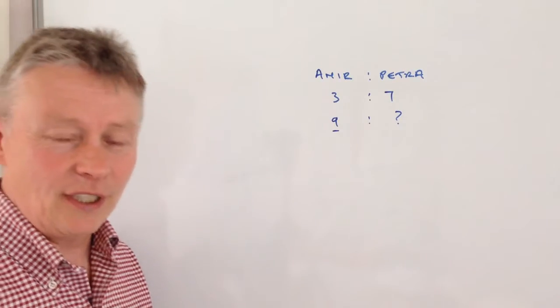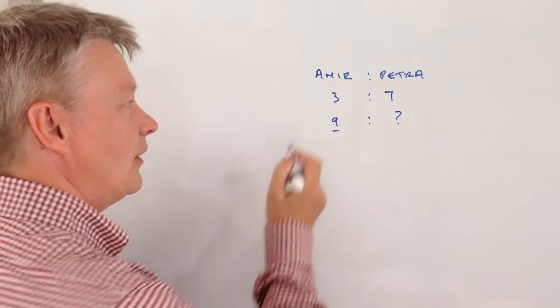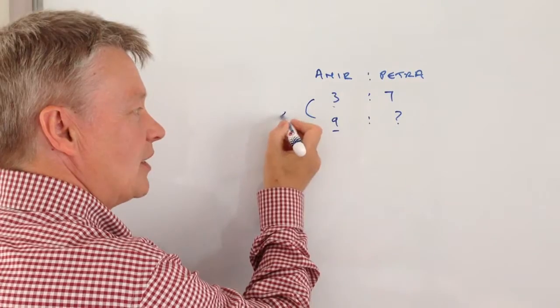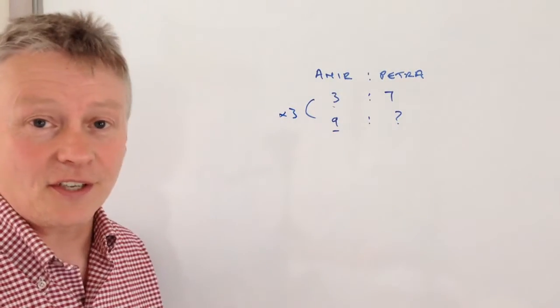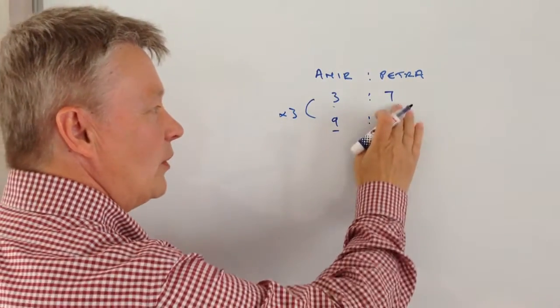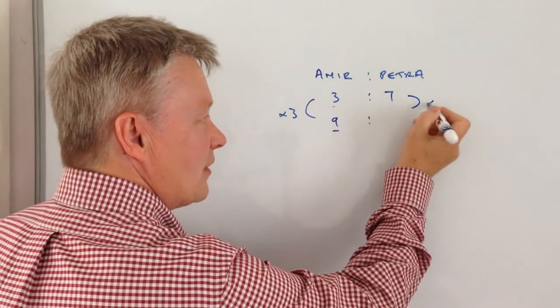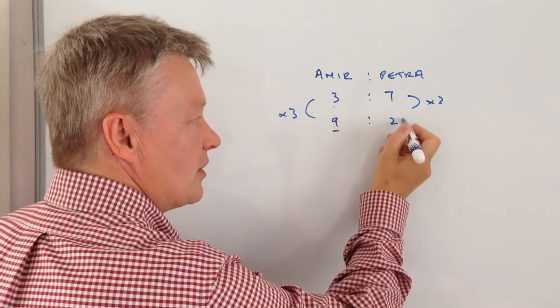Well, it's really a bit like dealing with fractions. All you're actually saying is that we've multiplied that 3 by 3 to get to 9. So therefore, we do exactly the same with Petra's age. It's 3 times bigger, which is 21.